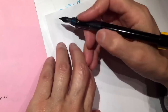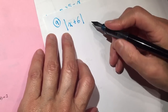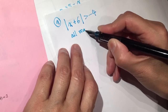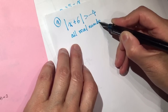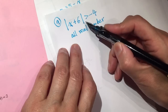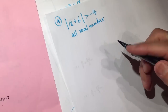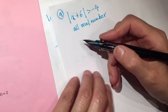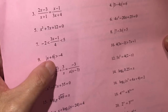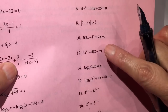Number 9: x plus 6 is greater than negative 4, or all real numbers. The smallest value of an absolute value is zero. Of course it's bigger than negative 4, so all values will be true for this one. Number 10 — did you see this is intentionally making you confused?